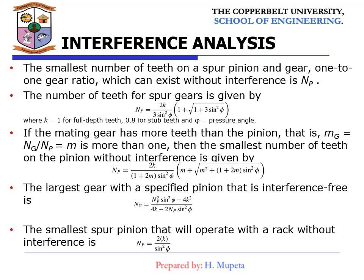When gear teeth are produced by a generation process, interference is automatically eliminated because the cutting tool removes the interfering portion of the flank — this effect is called undercutting. The interference analysis gives the smallest number of teeth on a spur pinion at a one-to-one gear ratio which can exist without interference, denoted NP. The number of teeth on the gear is given by the corresponding formula, where K equals one for full-depth teeth. If the mating gear has more teeth than the pinion, then Mg equals Ng over Np, and NP is the number of teeth on the pinion.